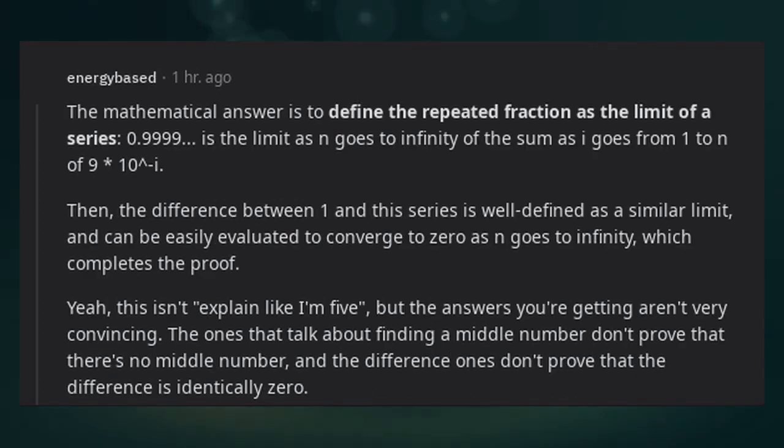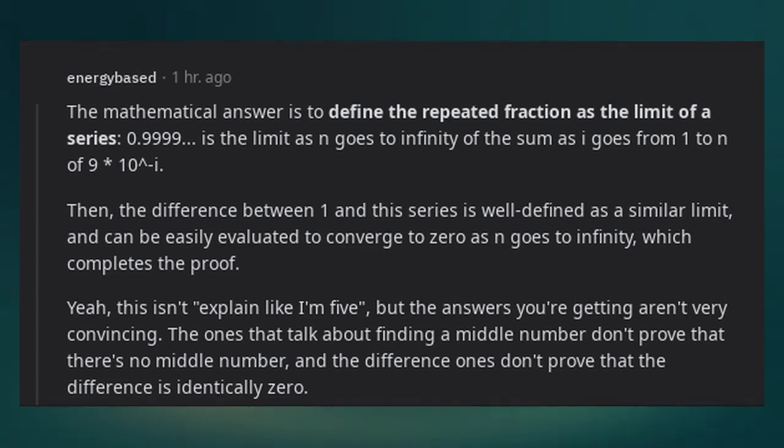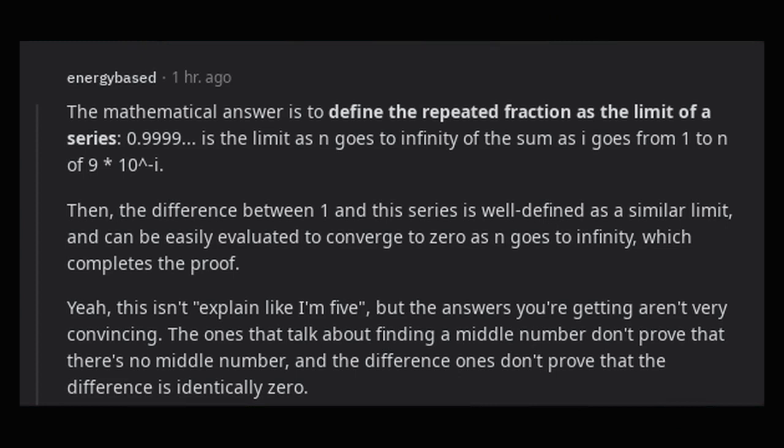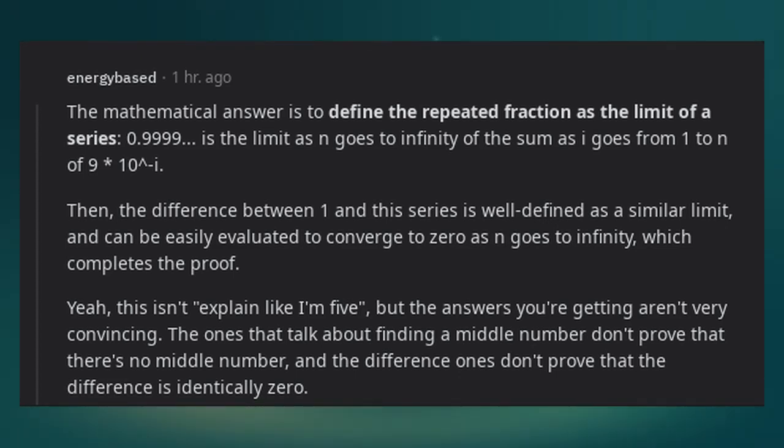The mathematical answer is to define the repeated fraction as the limit of a series. 0.9999 repeating is the limit as n goes to infinity of the sum as i goes from 1 to n of 9/10^i. Then the difference between 1 and this series is well-defined as a similar limit and can be easily evaluated to converge to 0 as n goes to infinity, which completes the proof.